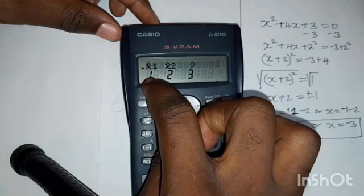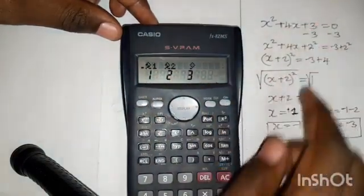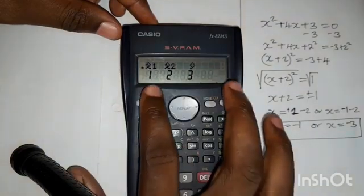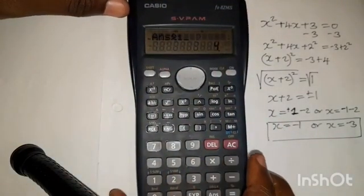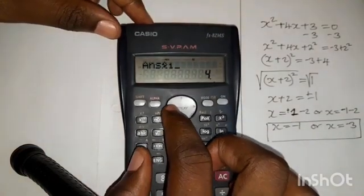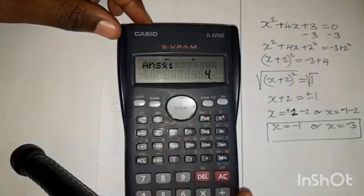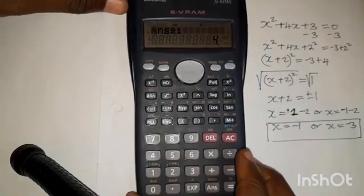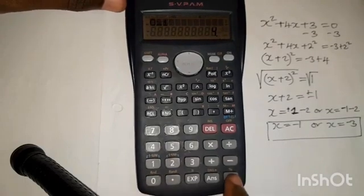So first of all, let's find the x1 value of this equation. Okay, so we're going to press 1. So we'll come here and press 1. After pressing 1, press the left key twice, 1, 2. After that, press 0. Then an equal sign.